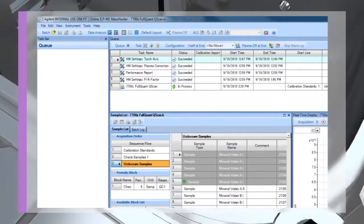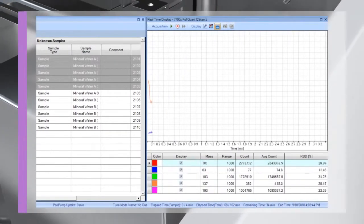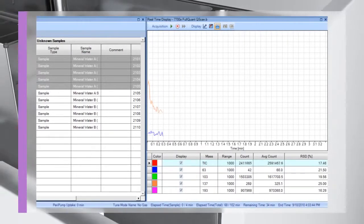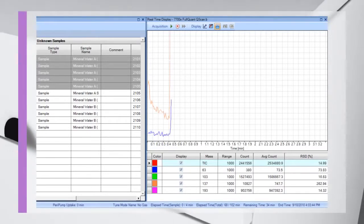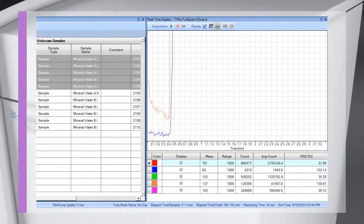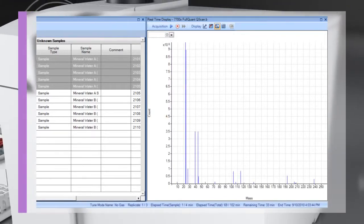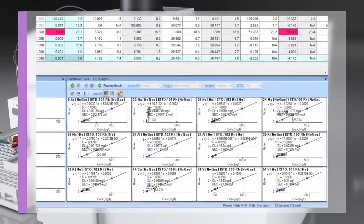Agilent's ICP-MS MassHunter software simplifies routine operation of the 7700 while maintaining the flexibility needed for advanced research. The built-in preset methods, comprehensive auto-tune functions and intuitive graphical interface allow novice users to quickly become productive.